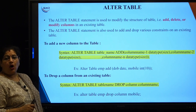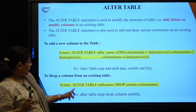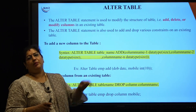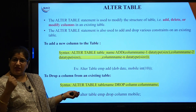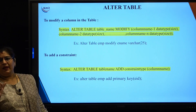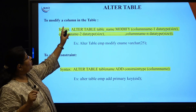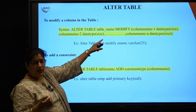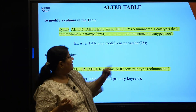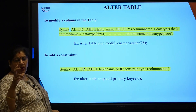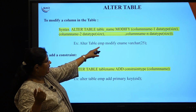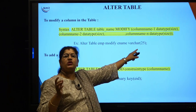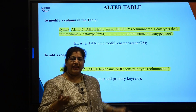To drop a column: ALTER TABLE table_name DROP COLUMN column_name. A single column can be removed from the table using the DROP COLUMN option of the ALTER command. To modify a column — change its data type or size — use: ALTER TABLE table_name MODIFY column_name data_type(size). For example: ALTER TABLE emp MODIFY ename VARCHAR(25). You specify what the new size or data type should be.